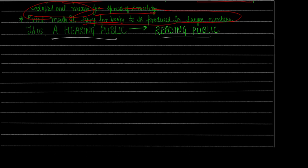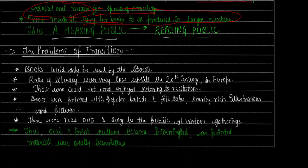However, this transition brought some problems too. The first problem was that books could only be read by literate people — only those who were educated could read books. The bigger problem was that literacy rates in Europe were very low up until the 20th century. So the majority of people could not read books. Although books had become accessible, many still could not read them.